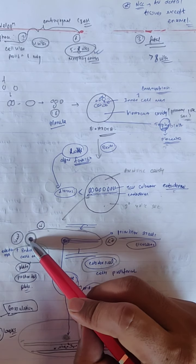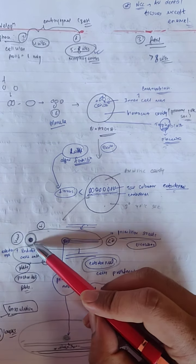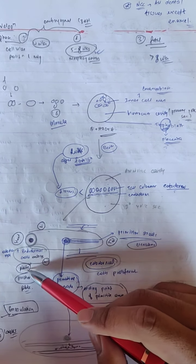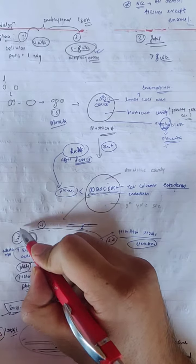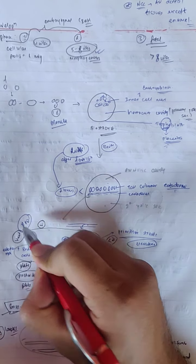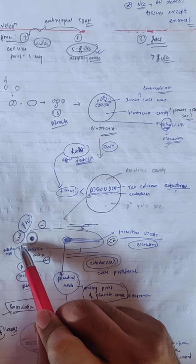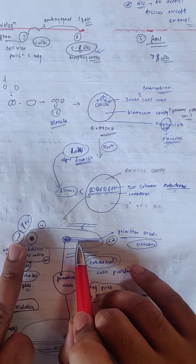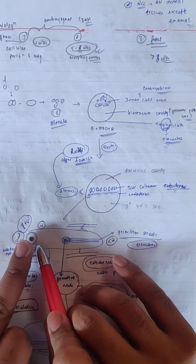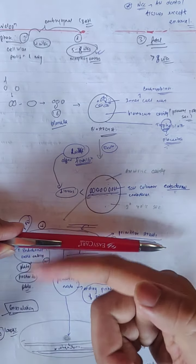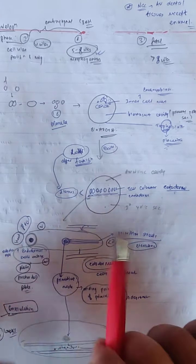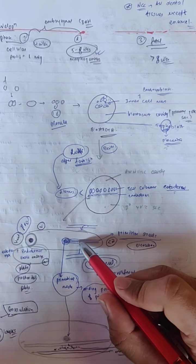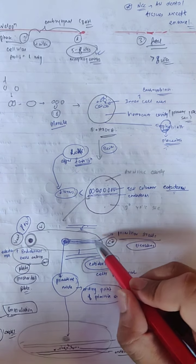There is a pro-chordal plate, which is the head end, and tail end. We have to educate them about the right and left. We have to take a cross for the tail end. This is the primitive streak and primitive node.